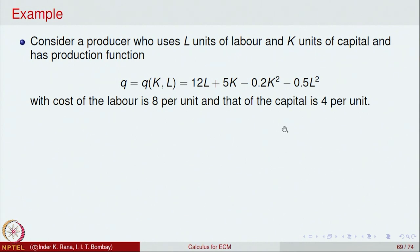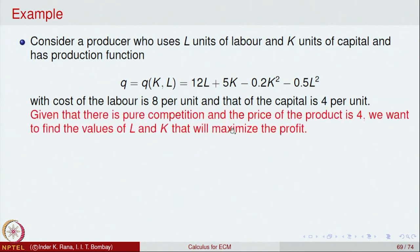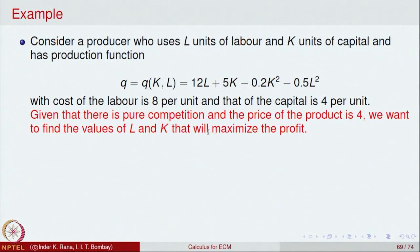Given that there is pure competition — meaning the price of the product is fixed — let us say the price is fixed at 4. We want to find the values of L and K that will maximise the profit. The production function is given, and we also have the cost inputs.